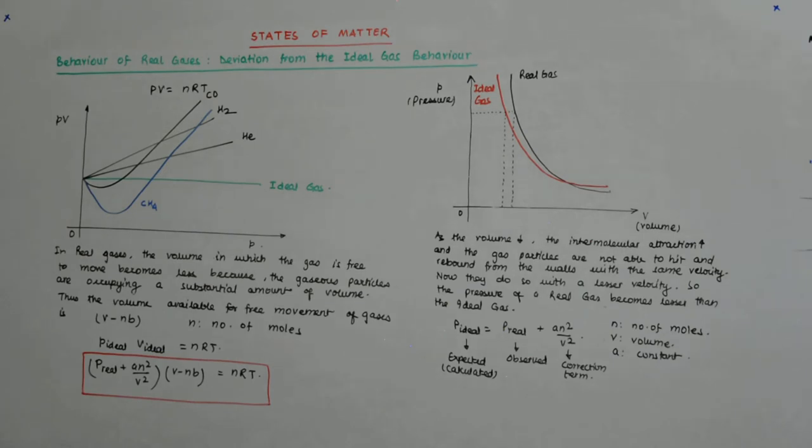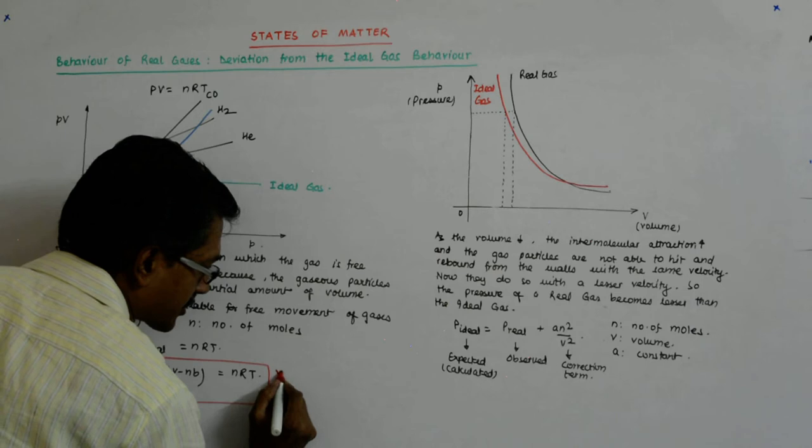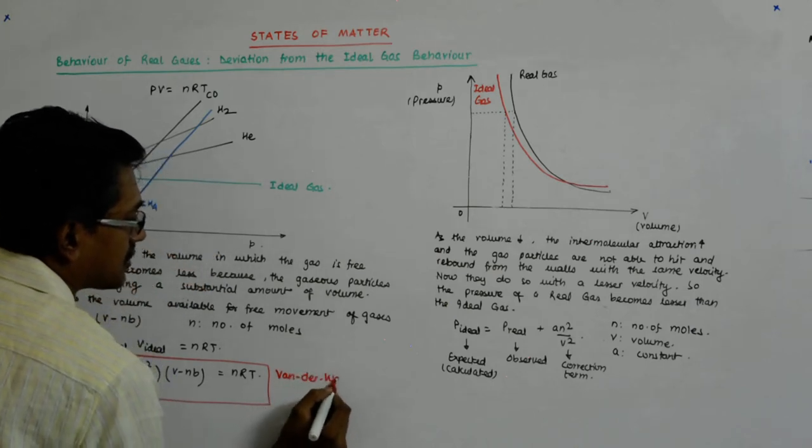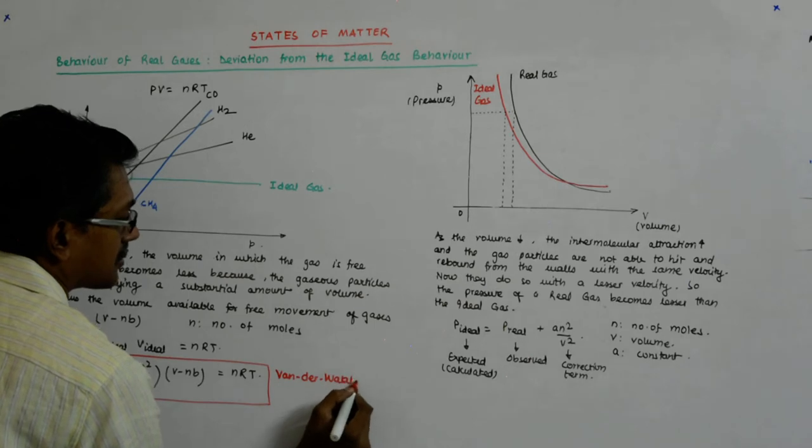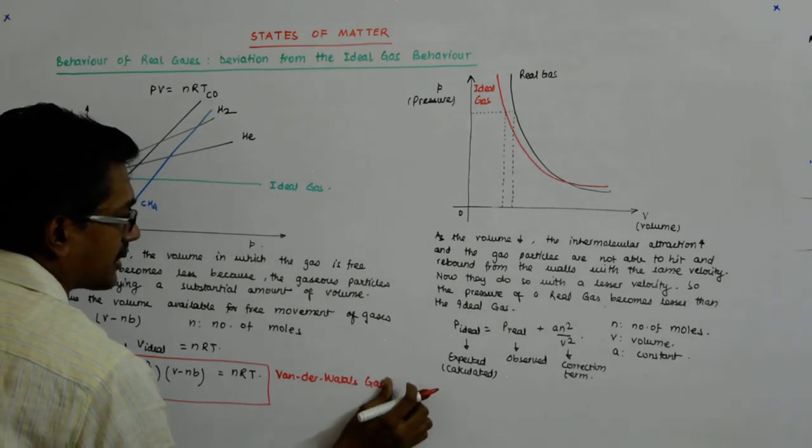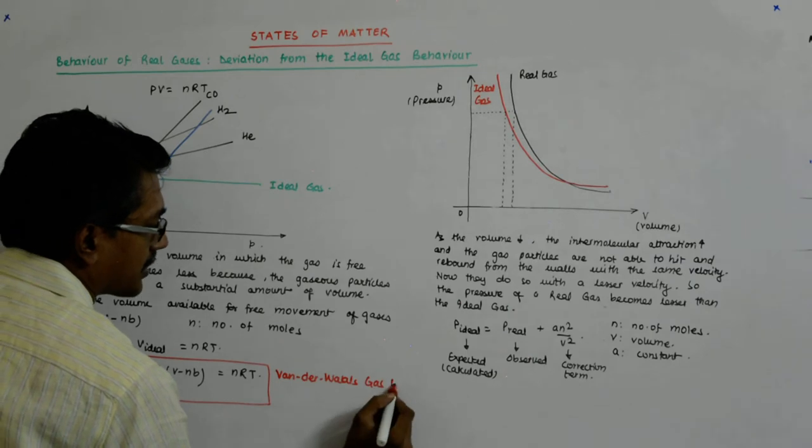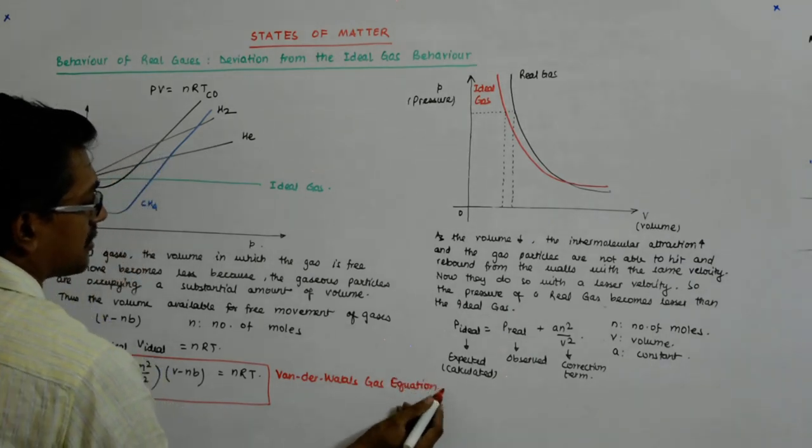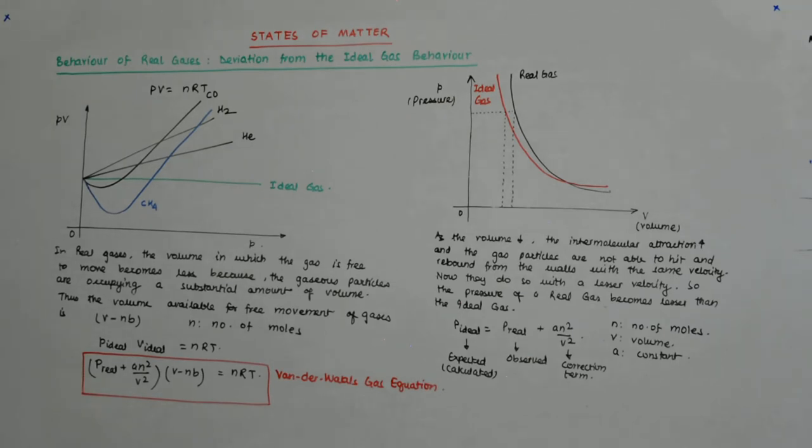Okay, what is A and what is B? This is called van der Waals gas equation. This is actually the real gas equation. Van der Waals equation.